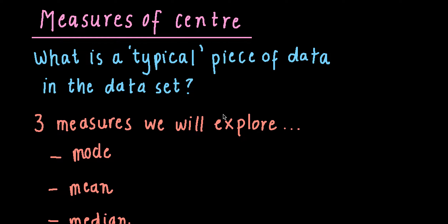Welcome year eights to this video. What I'm going to do is run through our three main measures of centre that we're going to be looking at this year. They all start with M which can be a little bit confusing, but I'm going to run through each one, how it's calculated and show you some examples as well. We did do these when you were in year seven so hopefully this will be just a little bit of a review for you.